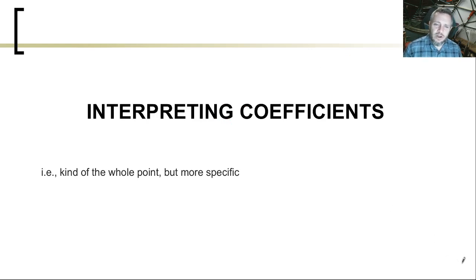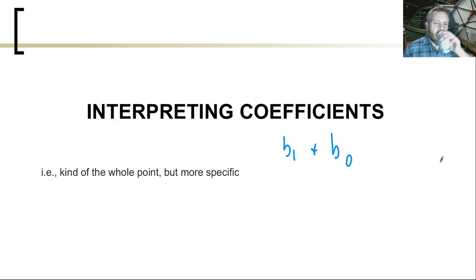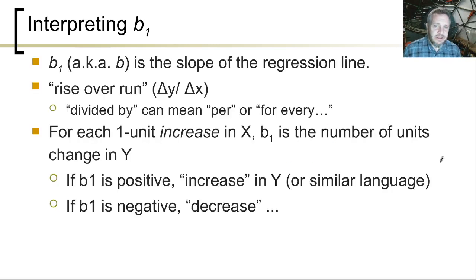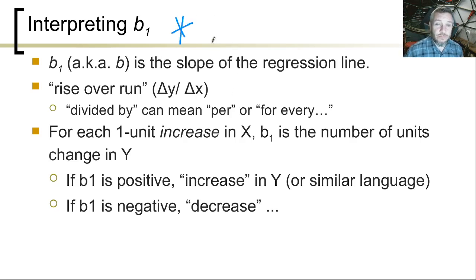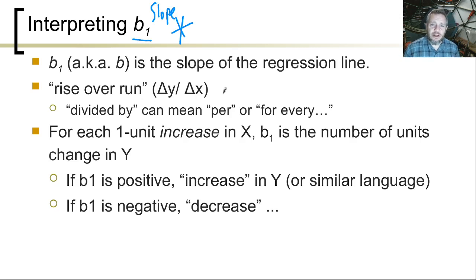So we need to interpret coefficients. The coefficients are b1 and b0 — those are the numbers that will be different from equation to equation. B1 is what we care about. We don't care about interpreting the y-intercept — we care about the slope. B1 is the slope of the regression line — rise over run.